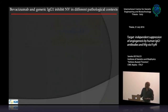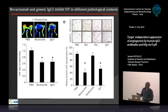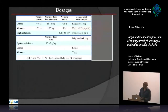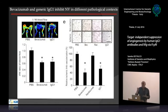We then moved to models outside the eye. In hind-limb ischemia, both bevacizumab and IgG1 were able to reduce blood flow by laser Doppler analysis. Histochemical analysis evaluating the ratio between ischemic and non-ischemic legs normalized on the number of myocytes confirmed that bevacizumab inhibited angiogenesis like generic IgG1, while the Fab fragment was unable to do this. Drugs had been delivered locally — intravitreally, intracorneally, or intramuscularly.